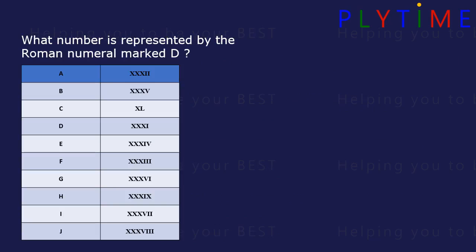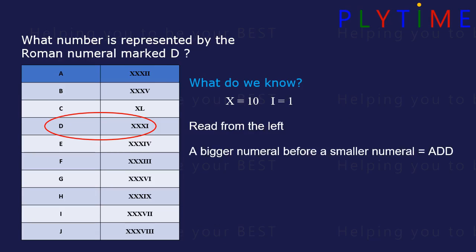What number is marked by the Roman numeral XXXI? X is 10 and I is 1. Reading from the left, a bigger numeral before a smaller numeral means add. So XXX is 10 plus 10 plus 10, which is 30, plus 1 is 31.